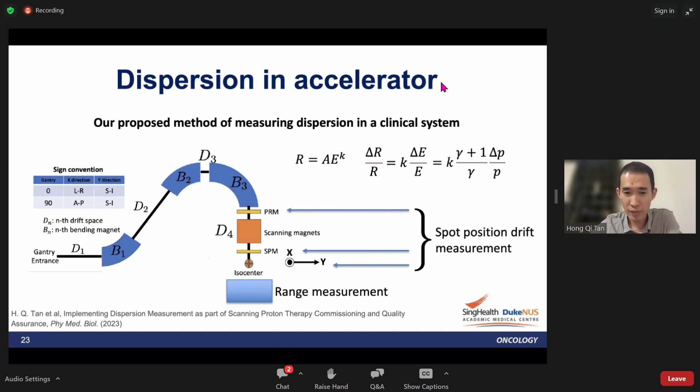In the PRM, SPM, and ISO center, with the range measurements and the delta R measurement, you will get the momentum errors. So with delta X and delta P over P, we will be able to get the dispersion at PRM, SPM, and the ISO center.